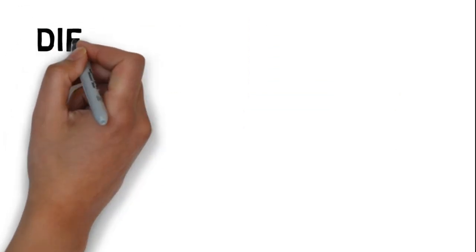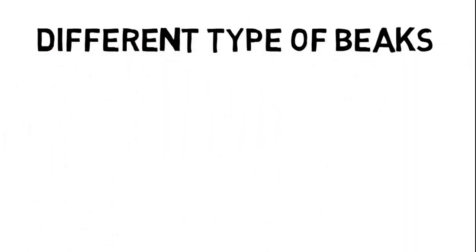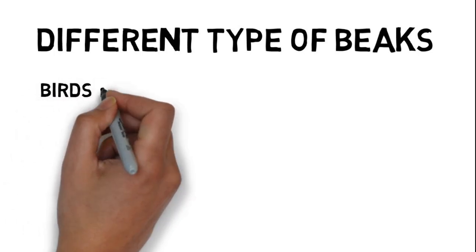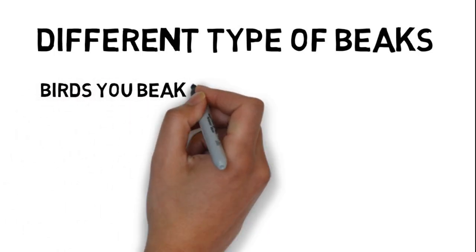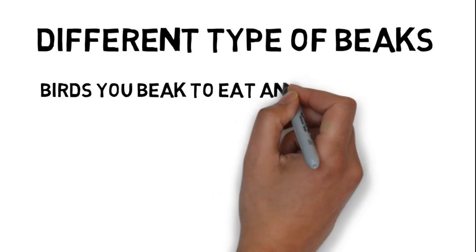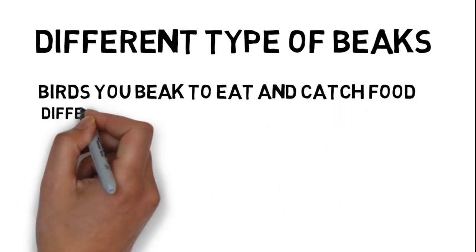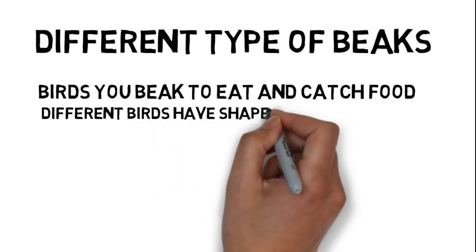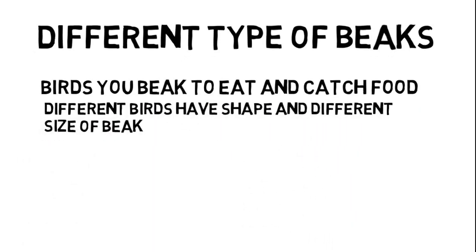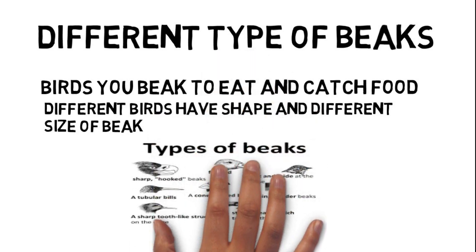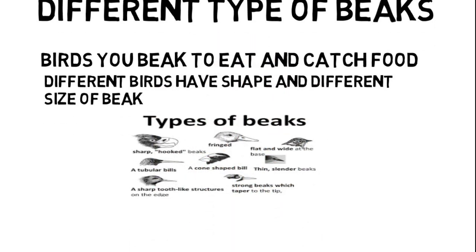Now let us understand different types of beaks. Birds use beaks to eat and catch food. Different birds have different shapes and sizes of beaks.